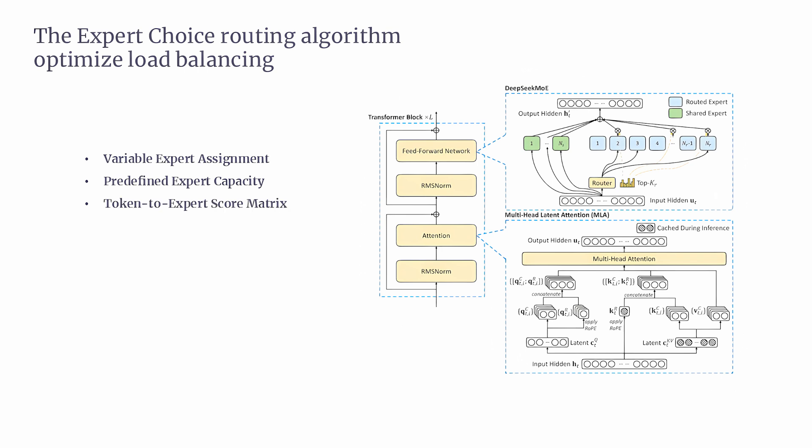The third feature is the token-to-expert score matrix. The EC algorithm generates a score matrix that matches each token to the most relevant expert based on the expert's training and specialization. This matrix helps the system make more informed routing decisions, ensuring that each token is sent to the expert most capable of processing it efficiently. This targeted approach boosts the model's performance, because the experts are always matched to the tasks they handle best.